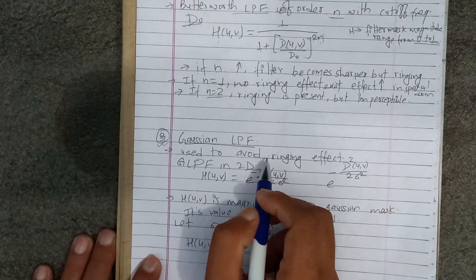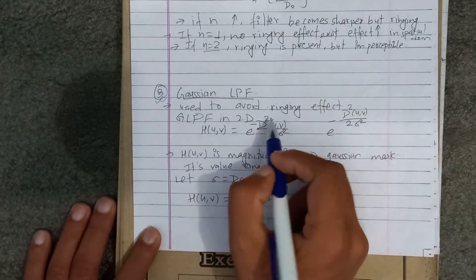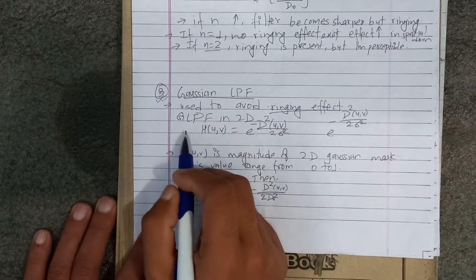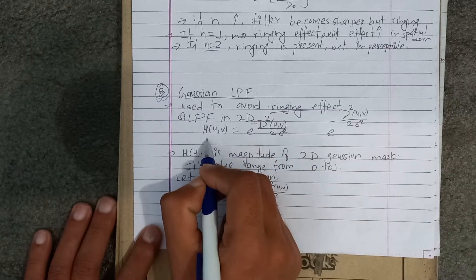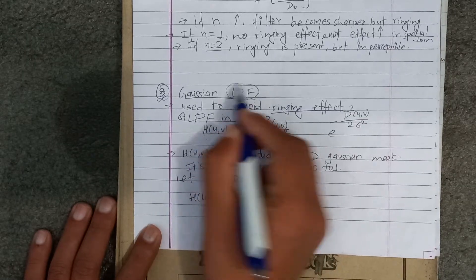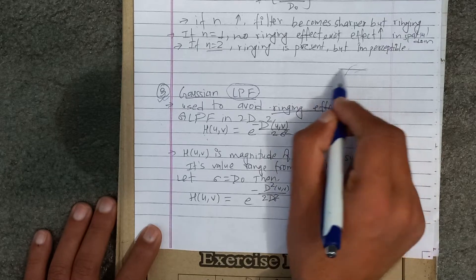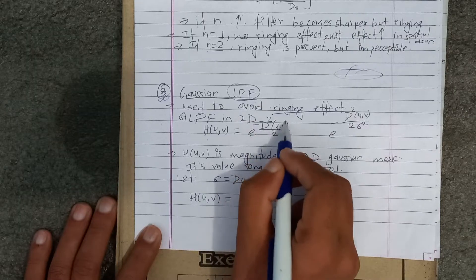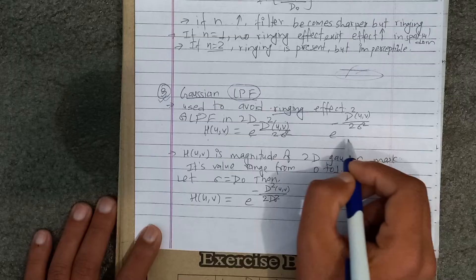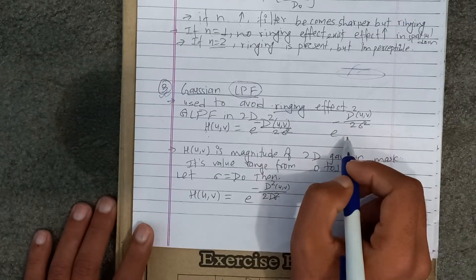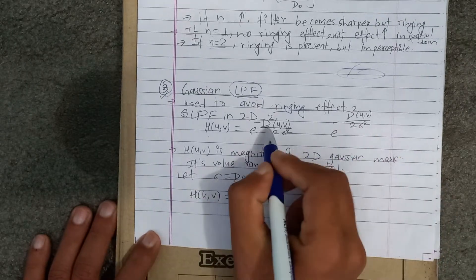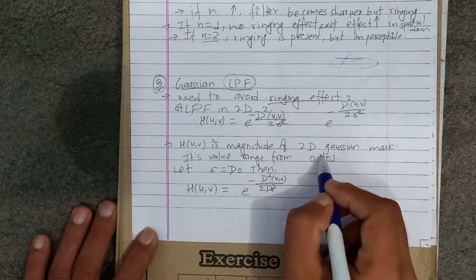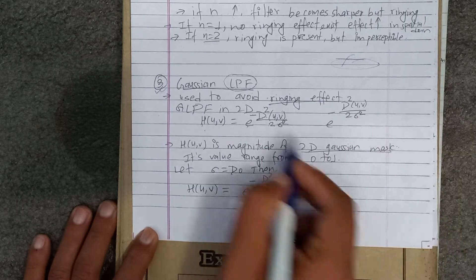The Gaussian low-pass filter is the third one. Use it to avoid the ringing effect. The Gaussian low-pass filter in two dimensions — the formula involves u and v — is a low-pass filter that cuts off high frequencies for a smoothing effect. The two-dimensional formula is: H(u,v) = e^(−d²(u,v) / 2σ²), where d(u,v) is the distance, and this is the magnitude of the 2D Gaussian mask.